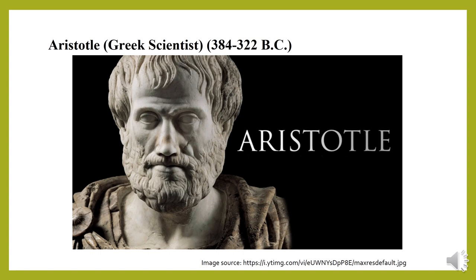Aristotle described animals without red blood, which are the majority of invertebrates, as Anaima, and animals with red blood, which are the vertebrates, as Enaima. He also classified animals according to their mode of nutrition, such as herbivores — animals adapted to eat plant food — and carnivores, which are meat eaters.